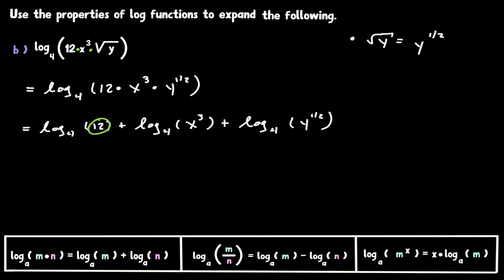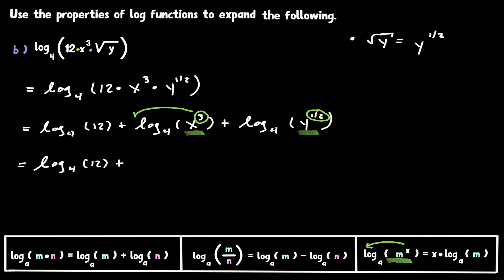In our first log, the inside is already a value, so there's nothing to do there. But the second expression still has an exponential, and the same goes with the third expression. We have a rule for that — anytime we have an exponential inside the log, we can get the exponent and bring it to the front. Let's bring down the first expression. Now let's bring the value of 3 to the front, getting 3 times log base 4 of x. And let's do the same with the third expression, bringing this 1 half to the front as multiplication.